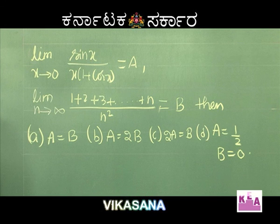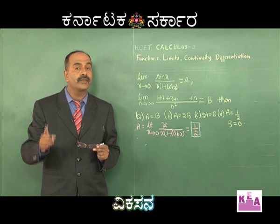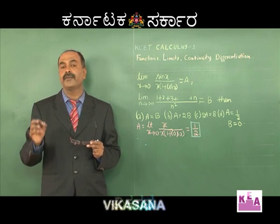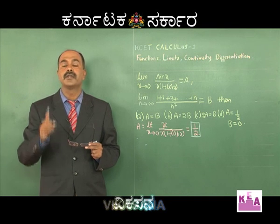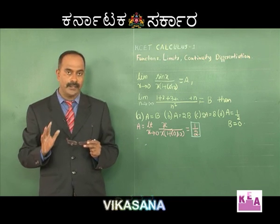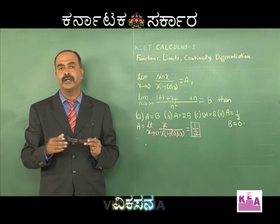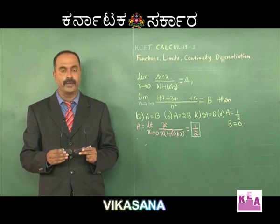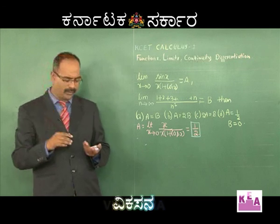For limit x→∞ of f(x)/g(x) where f and g are polynomials: if the degree of f(x) is less than degree of g(x), the limit equals 0; if degree of f(x) is greater than degree of g(x), the limit equals infinity; if degree of f(x) equals degree of g(x), the limit is a finite quantity. This is an important shortcut — make a note of this.